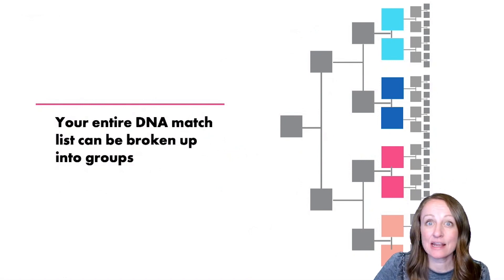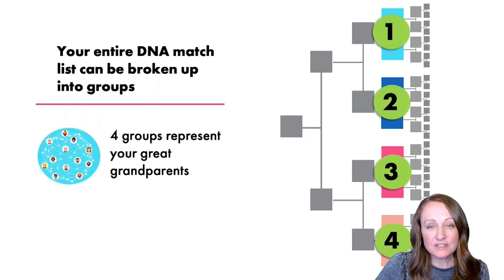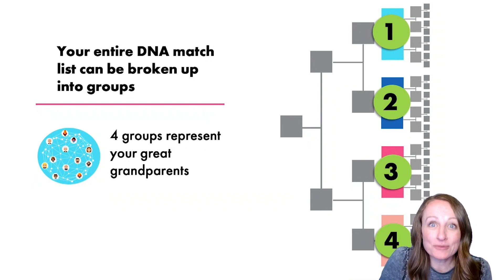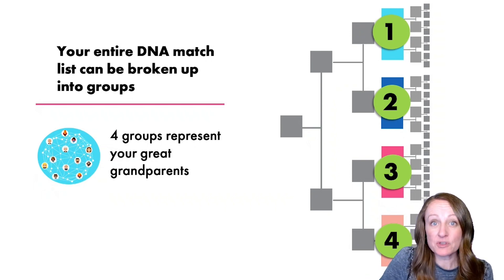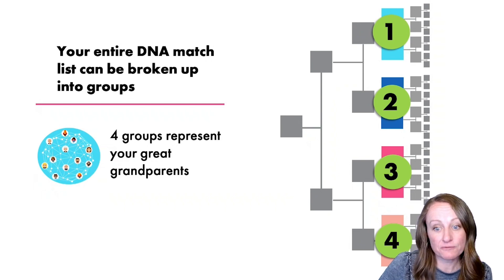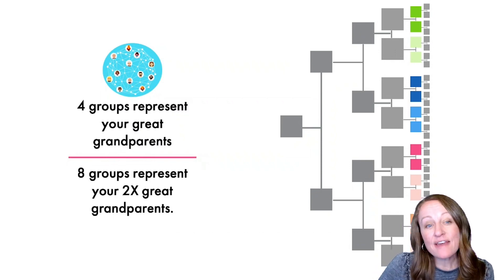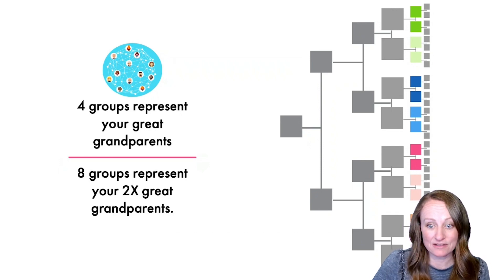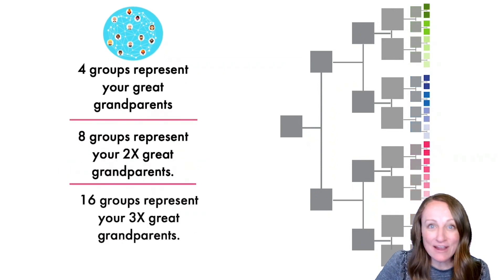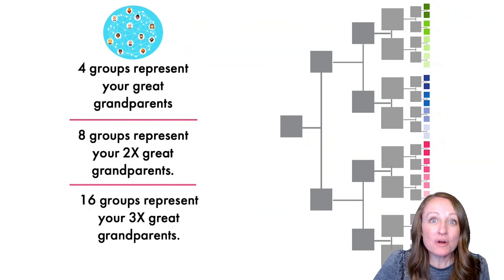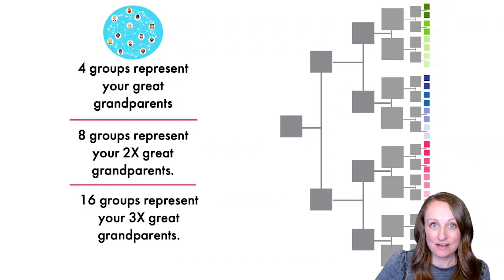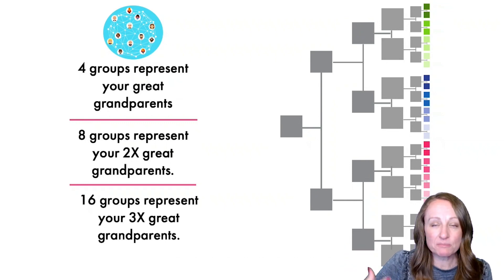A genetic network is a group of people sharing DNA with each other and also with you. Your entire DNA match list can be broken up into groups — say four groups representing your four great-grandparent couples, as long as those people aren't related to each other. You could also find eight groups to represent your two-times-great-grandparents, or 16 groups to represent your three-times-great-grandparents. This is what you're aiming for: breaking up your match list into these groups.